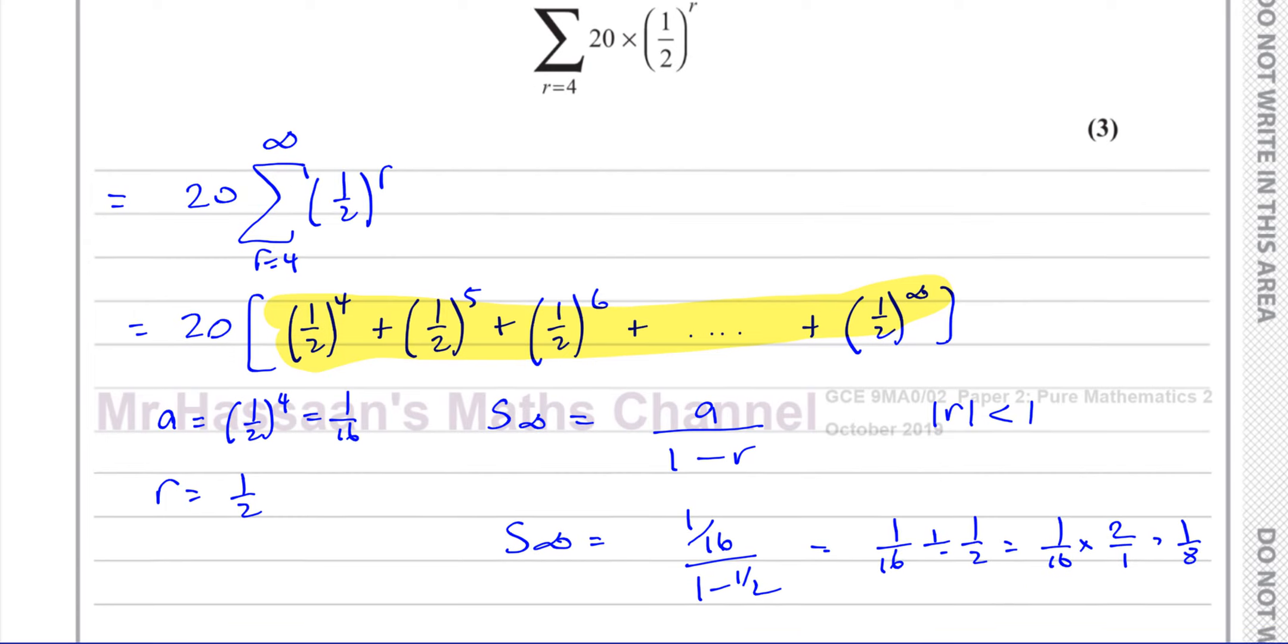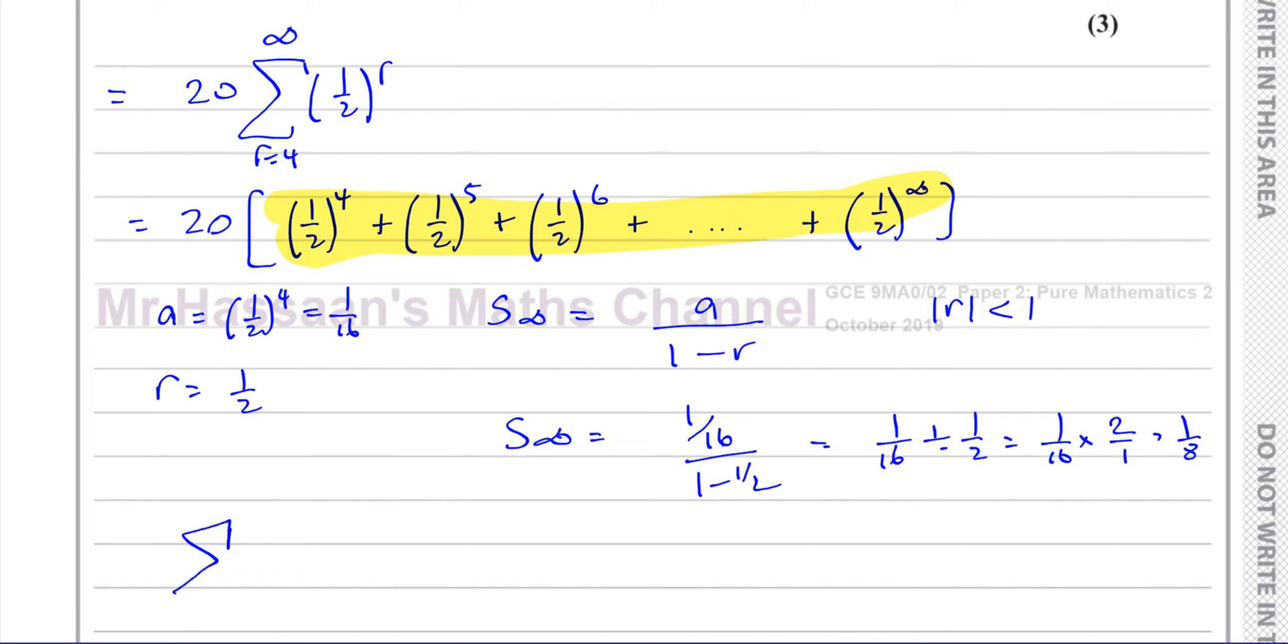Now we know that a is basically 1 over 16 and r is a half. So the sum to infinity will simply be equal to 1 over 16 divided by 1 minus a half, which is a half. So it's 1 over 16 divided by 1 over 2, which is 1 over 16 times 2 over 1, which is 1 eighth. So our sum from r equals 4 to infinity of 20 times a half to the power of r is going to be 20 times 1 over 8, which is 5 over 2. So the sum of all those numbers is going to be 2.5. So there's our answer, 2.5. That's the sum of all of those numbers.